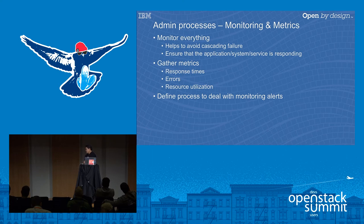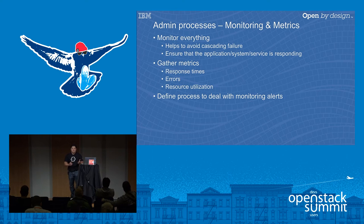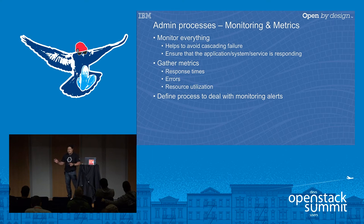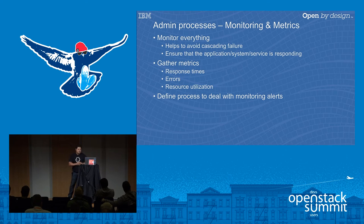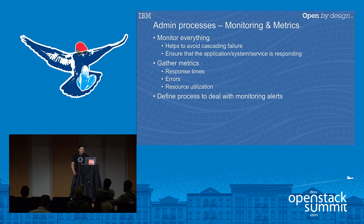Along with these events, we want to make sure there's a well-defined process for how to handle them. What happens when a service goes down? Or what happens if a number of nodes start failing? The alerts and events generated by the metrics and metering components should provide insight to the people triaging that event.